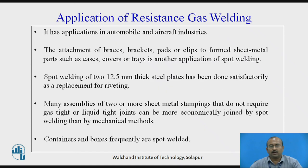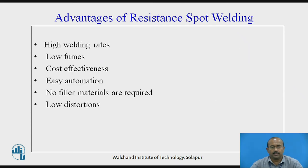The advantages of resistance spot welding are: high welding rates, low to no fumes, cost effectiveness, easy automation, no filler material required, and very low to no distortion. These are the key advantages as compared to other welding processes such as gas welding and arc welding.